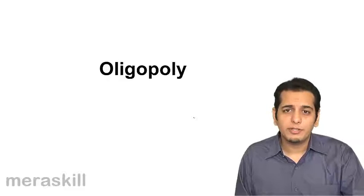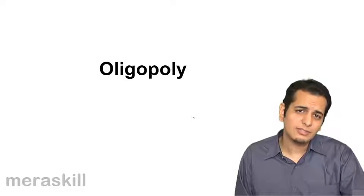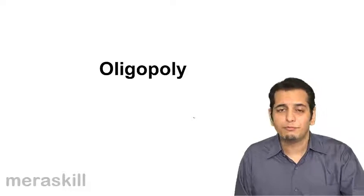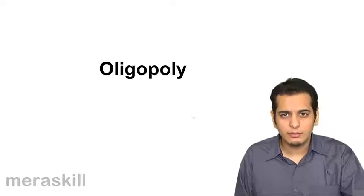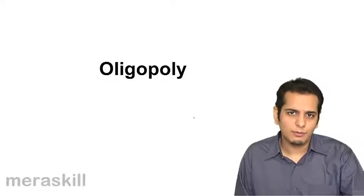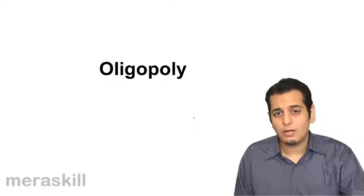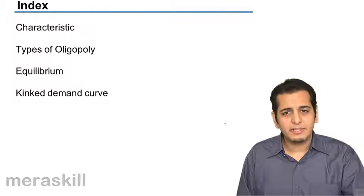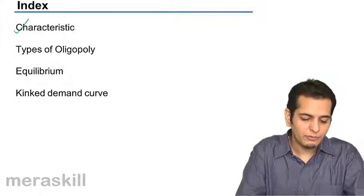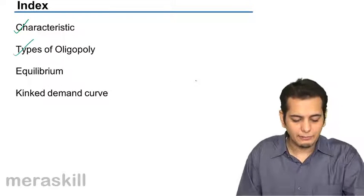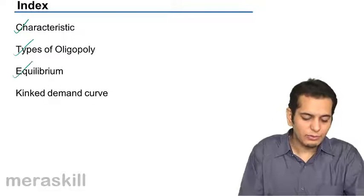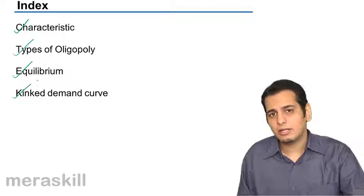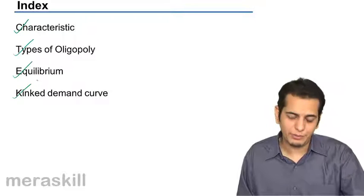Now let's get oligopoly done. In the last session we completed monopolistic competition, before that we did monopoly, and initially we had done perfect competition. Now we'll get oligopoly done. In this section we are going to cover the characteristics of oligopoly, types of oligopoly, equilibrium under oligopoly, and the kinked demand curve under oligopolistic competition.